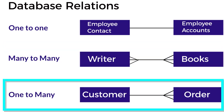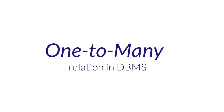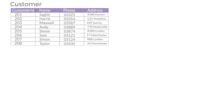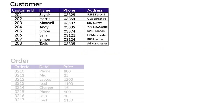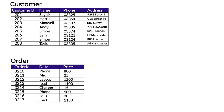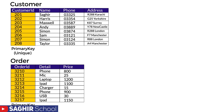In one-to-many, one side is plain and the other is shown by a crow's foot shape. One customer can have many orders — that's a one-to-many example. This is the most widely used among the three relation types in database systems. Looking at the example of customer and order: one customer row can be linked to many orders, but one order row can only be linked to one customer.